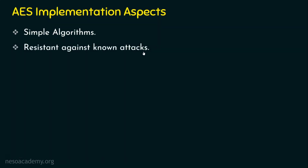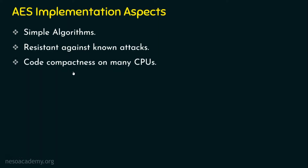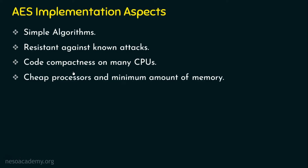Not only is AES simple, but it is also resistant towards known attacks. Because of the code compactness, AES can work on many CPUs irrespective of hardware or manufacturer. AES can be well adopted in multiple hardware platforms. It can also operate on cheap processors — not just in terms of cost but also in terms of performance — and it requires a minimum amount of memory. Even a slow-performing processor can execute AES in a decent manner.